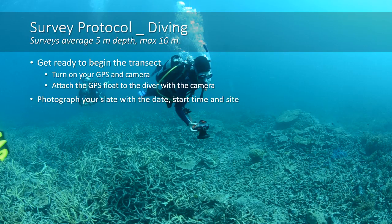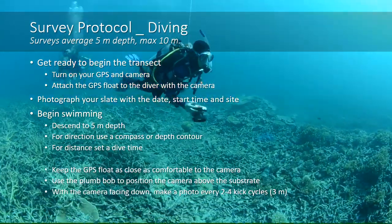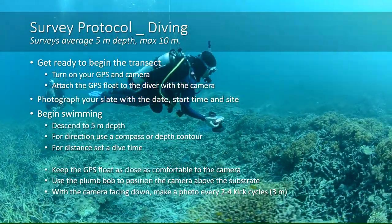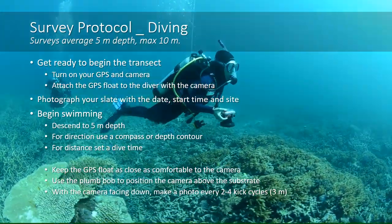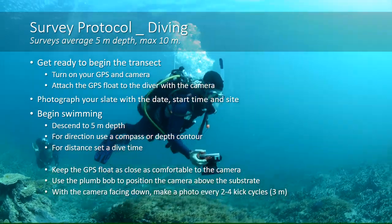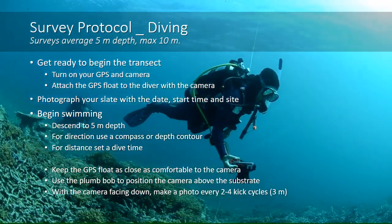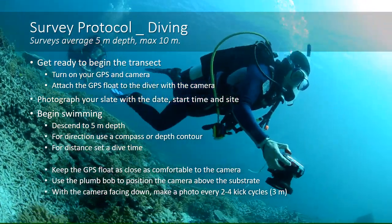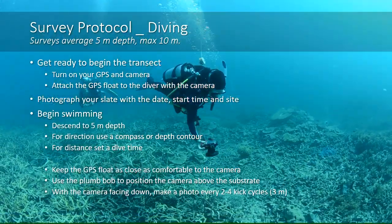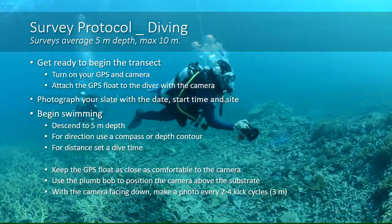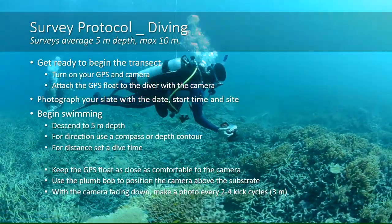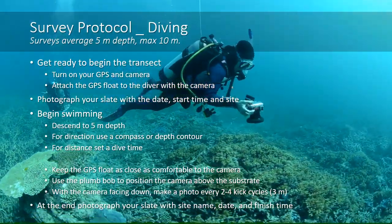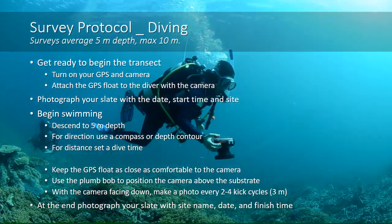The diving protocol is similar. Turn the GPS and camera on in tracking mode, attach the GPS on a reel to the diver, and take a photo of the slate with date and start time. Descend to five meter depth and determine direction using depth contour or bearing. After around 25 to 30 minutes you will have covered around 500 meters, then ascend to the surface. Keep the GPS floating on top as close as possible and take photos of the seabed the same way as the snorkel transect. Make an end photo at the conclusion of the transect to clearly mark the start and end.